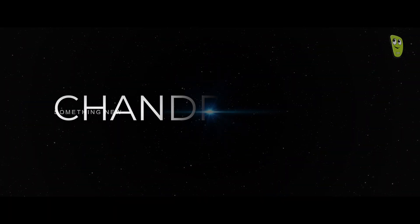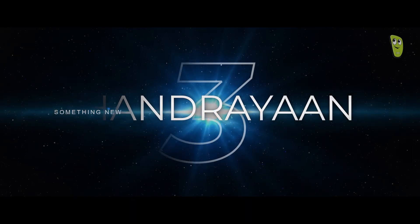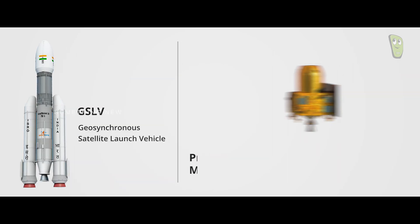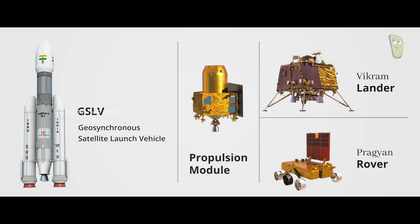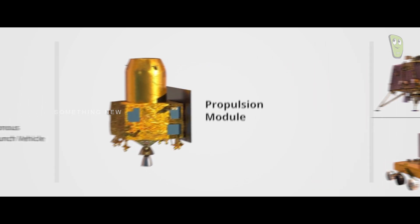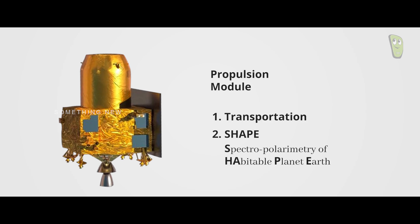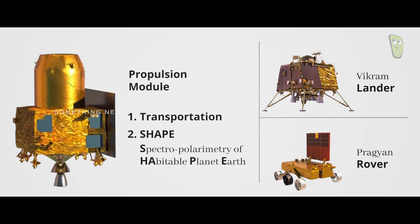Chandrayaan-3 has three main payloads: propulsion module, lander, and rover. Since the orbiter is already orbiting the moon, a propulsion module has been created instead, used for transportation and exploring the habitable zone planet. The lander and rover perform similar tasks.